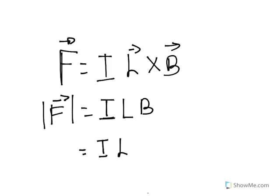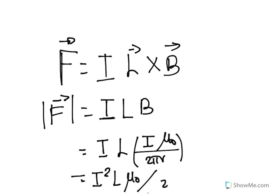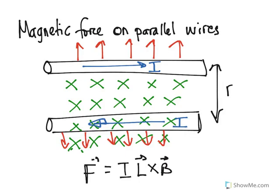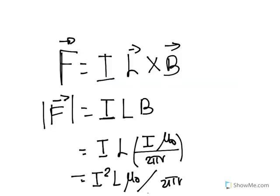We can state I L B, being the magnetic field due to the other wire, is going to be I times μ₀ over 2πr. At the very end, we have I squared times L times μ₀ over 2π times the radius, being the distance between these two wires. So this is the magnitude of the force due to current-carrying wires.